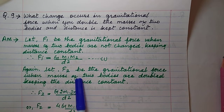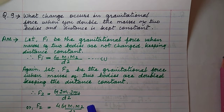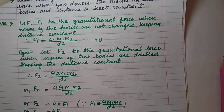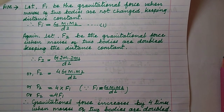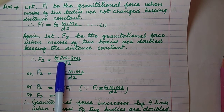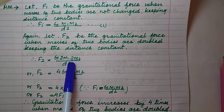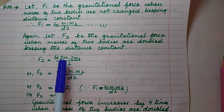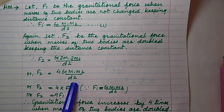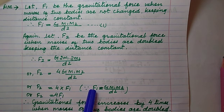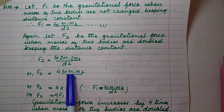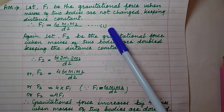When both masses are doubled: F₂ = G(2m₁)(2m₂)/d². Solving: F₂ = 4Gm₁m₂/d². Since F₁ = Gm₁m₂/d² from equation 1, we get F₂ = 4F₁. Therefore, the gravitational force increases by 4 times when the masses of two bodies are doubled keeping the distance constant.